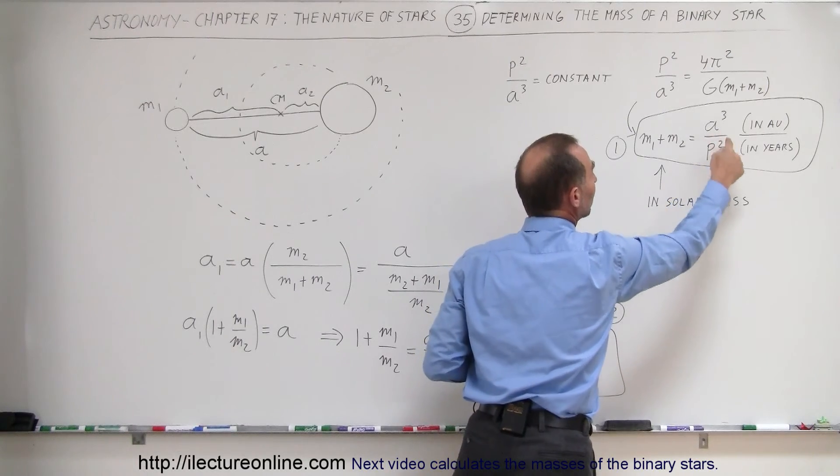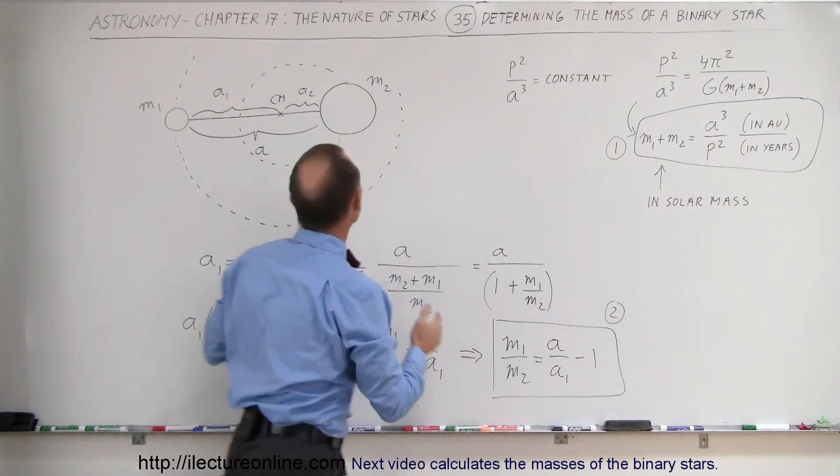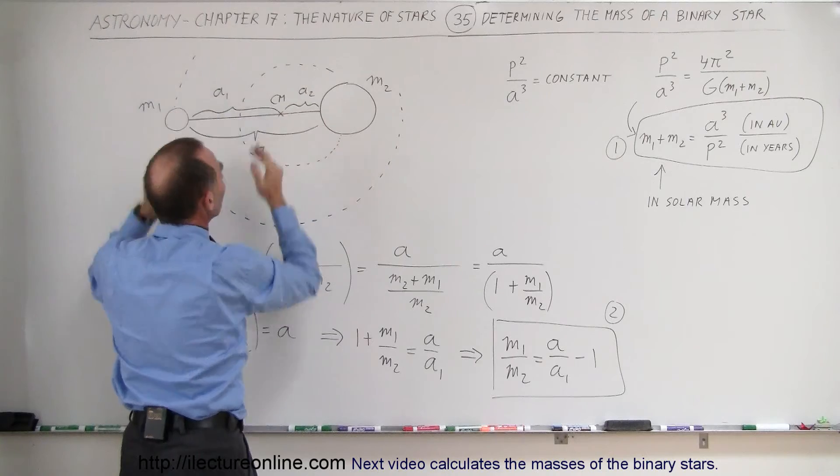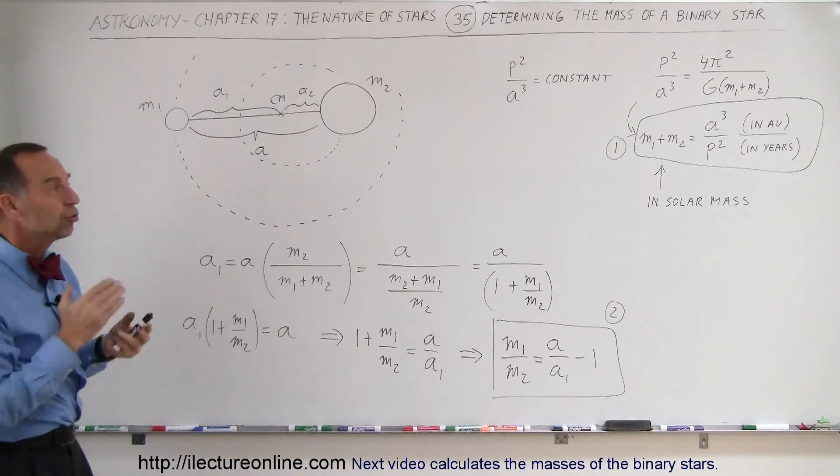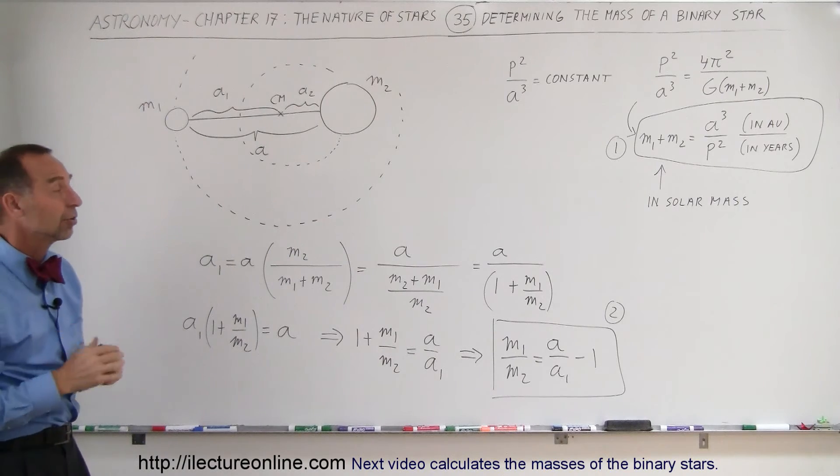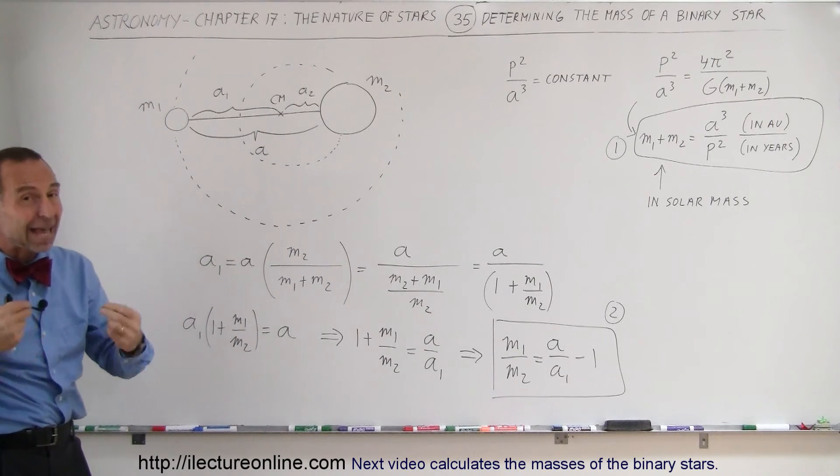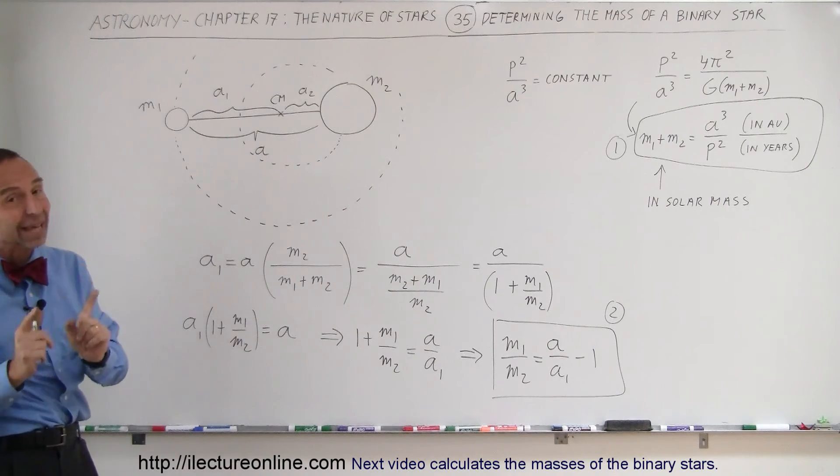Then they measure how long it takes for them to make one complete orbit. Knowing the distance between the objects, they know the period and they know the distance to the center of mass. They can then take those two equations simultaneously and solve for the two masses of the two stars in the binary star system. And that's how we can get fairly accurate measurements of the masses.